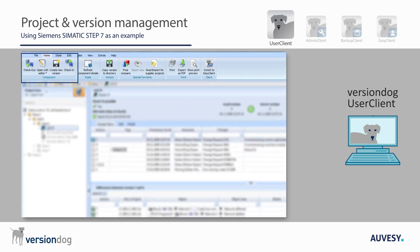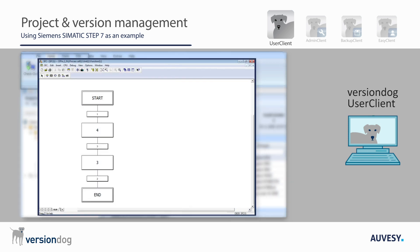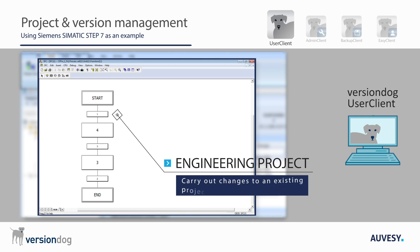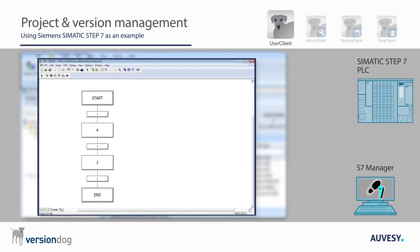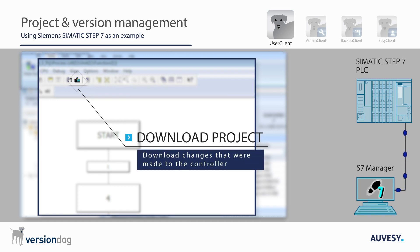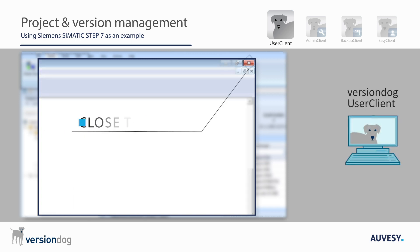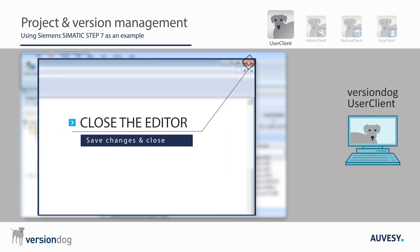To make changes to a project, you first need to open the editor — in this case, the Simatic Manager. This can be done directly from Version Dog. After changes to the parameters in the editor are made, these changes can be downloaded to the PLC. You can now save the changes you have made to the project, close the editor, and return to the Version Dog user client.